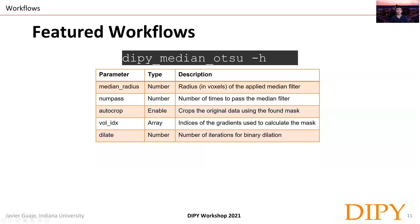The next workflow is DiPi median Otsu, a very handy tool for creating masks from our diffusion dataset. The parameters include the radius in voxels for the median filter, the number of times to pass the median filter, the number of iterations for binary dilation, an autocrop Boolean flag to crop the original data using the found mask, and which gradient indices to use to calculate the mask.